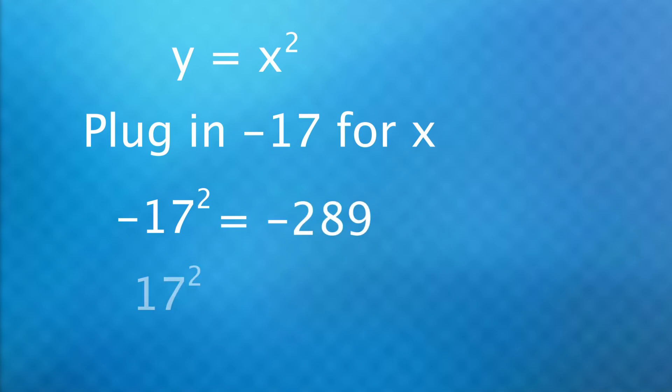Same goes for exponents. If you have y equals x² and have to plug in negative 17, for those who do it on the calculator, if you type negative 17 to the second, you will get a negative number. Again, your calculator is thinking to do exponents first and then multiply the negative 1 since multiplication comes after exponents.